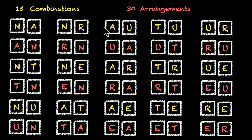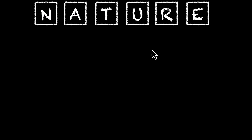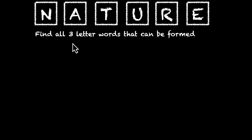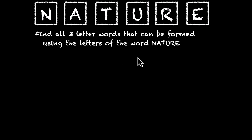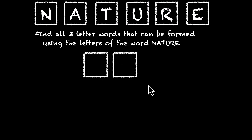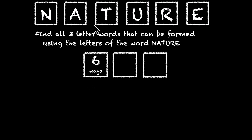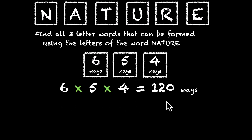So this is how we can figure out the number of combinations. Let's try one more. We have N, A, T, U, R, E, and we need to find all three-letter words that can be formed using the letters of the word nature. So we need to form three-letter words — one, two, three, three letters. The first letter can be filled in six ways, then we have five, and then we have four. Six times five times four, that's 120 ways.